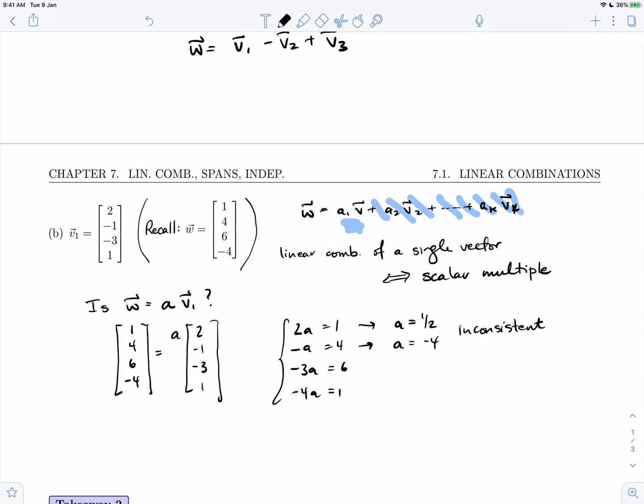And so no, w is not a multiple. Therefore w may not be expressed as a linear combination of this vector v1.